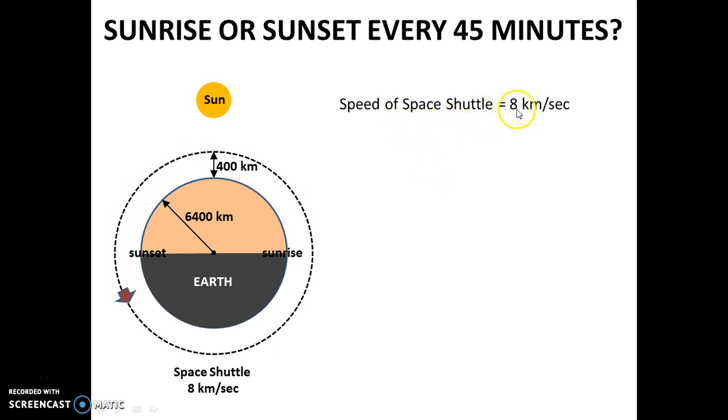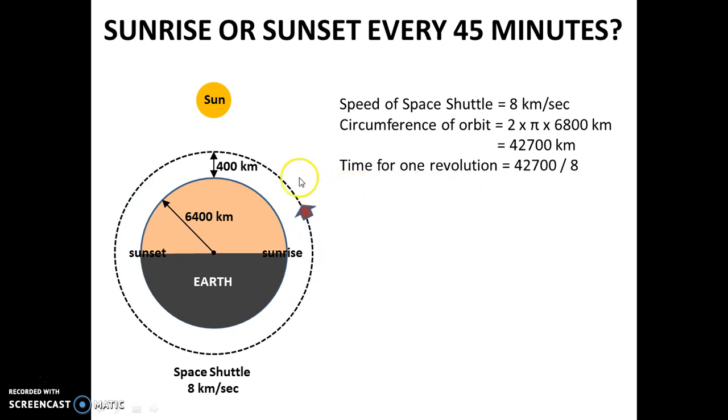Now, the speed of the space shuttle is 8 km per second. The circumference of one revolution is by formula 2 pi r, which equals 2 pi into 6800 km, which equals 42700 km. The time taken to complete this one full revolution, is given by the formula, time equals distance upon speed, which is 42700 divided by 8, which equals 5340 seconds, which is almost equal to 89 minutes.